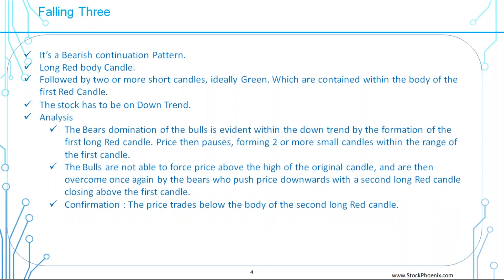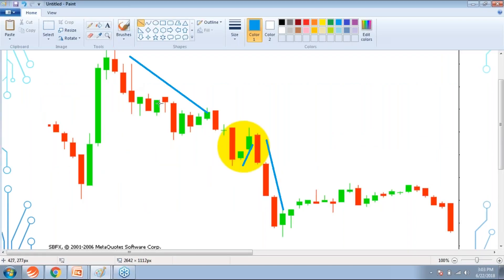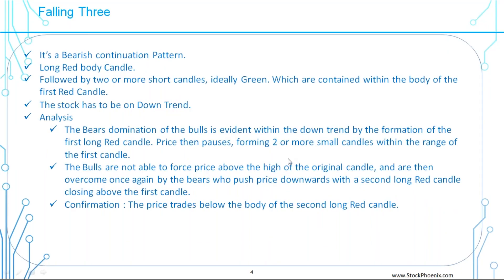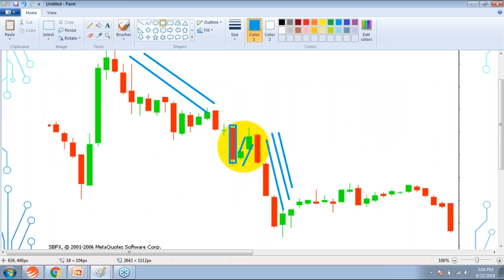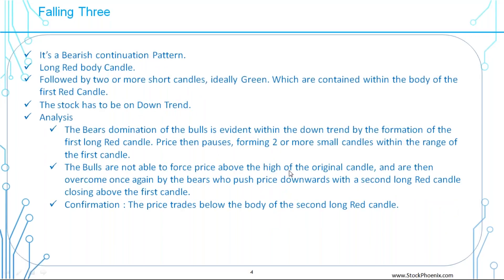In the analysis, the bears' domination over the bulls is evident within the downtrend by the formation of the first long red candle. Price then forms two or more small candles within the range of the first candle — that is the bears' domination. It slowly tries to make a retracement and come into an uptrend, but the bears pull the market further down, creating the same percentage of fall as the previous session. The bulls are not able to force the price above the high of the original candle.